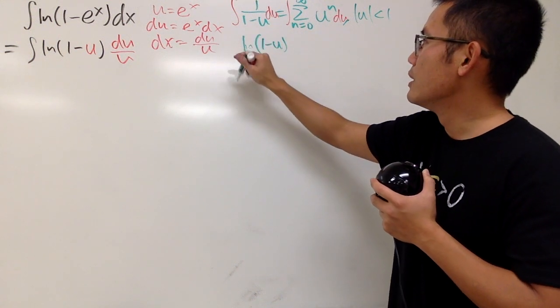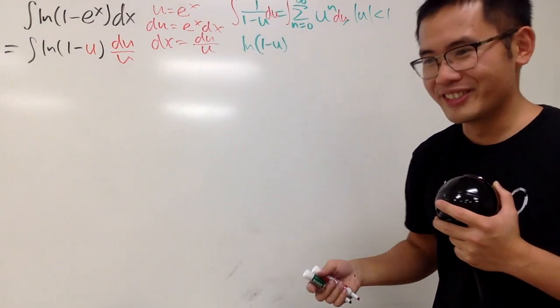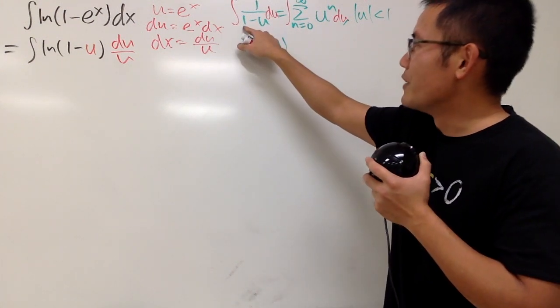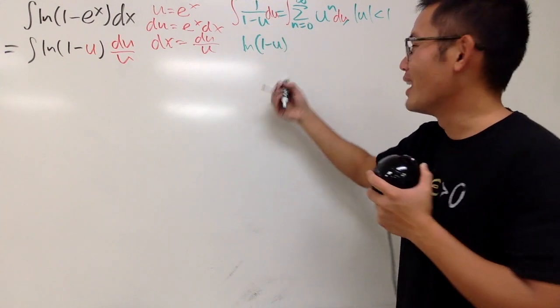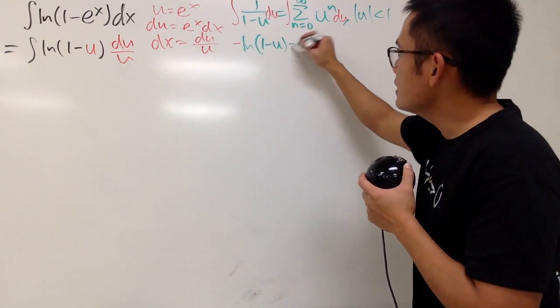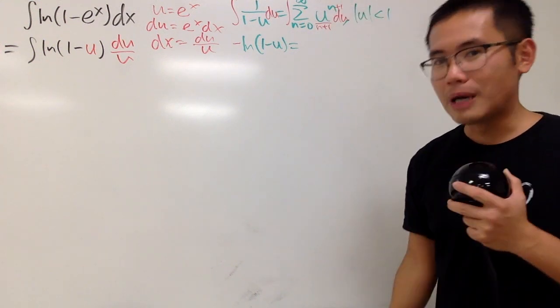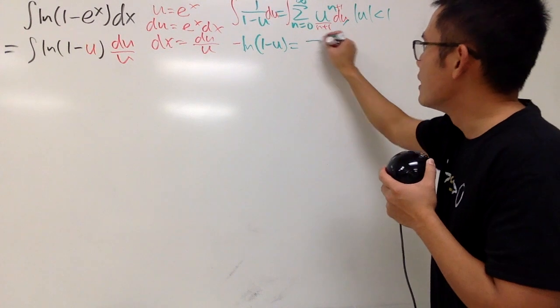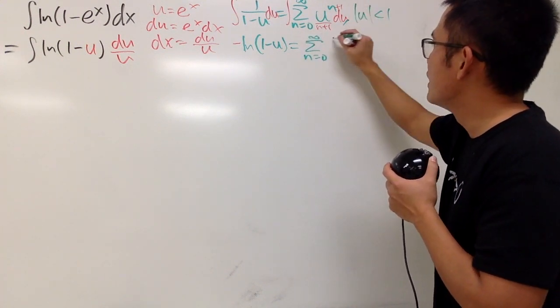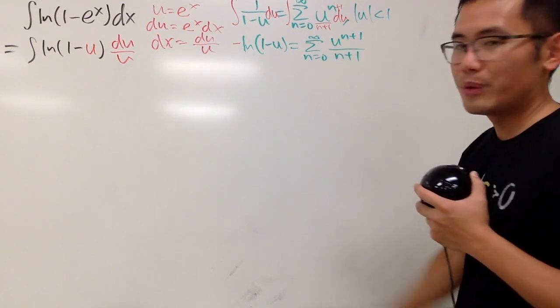And I will also have to remember the chain rule. Because that's the reverse version of the chain rule. Divided by the derivative of 1 minus u, which is negative 1. Let's just divide negative 1 right here. On the right-hand side, go ahead and add 1 divided by the new power. That's how you integrate a power series. And we get the series as n goes from 0 to infinity, u to the n plus 1 over n plus 1.